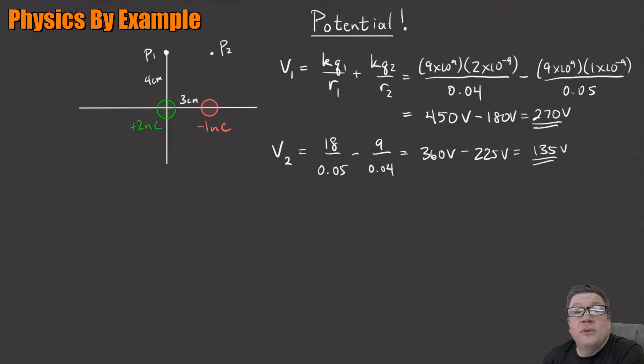What is the change of voltage? Often we're going to be asking for something like this. Suppose I go from P1 to P2. What is the change of voltage going from P1 to P2? So the change of voltage from 1 to 2 is just, well, it's just V2 minus V1, right? The delta is always final minus initial.